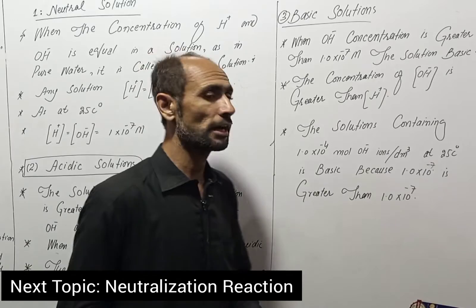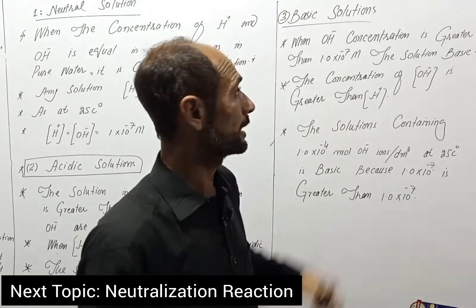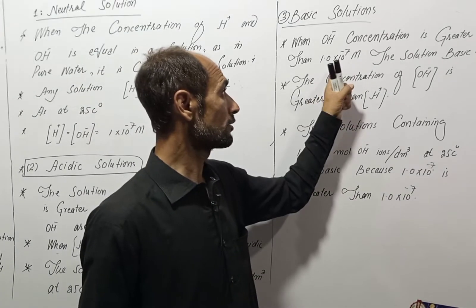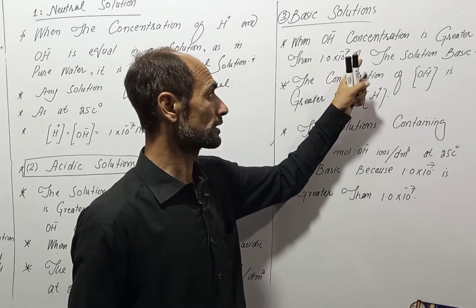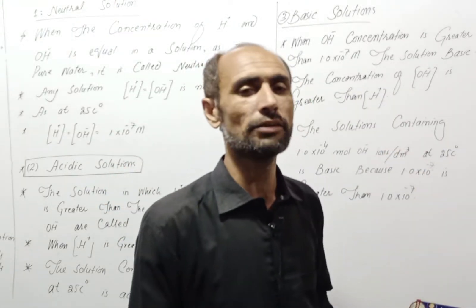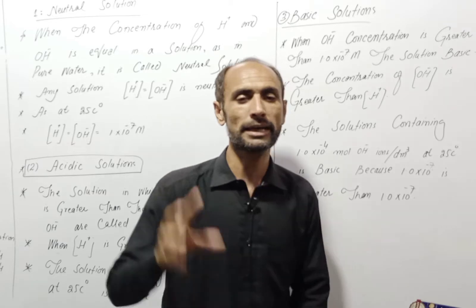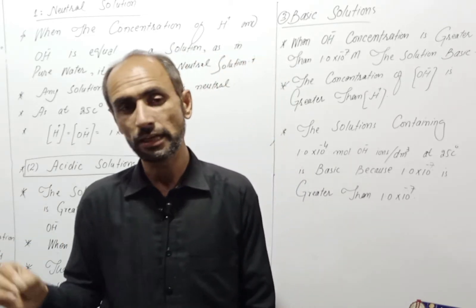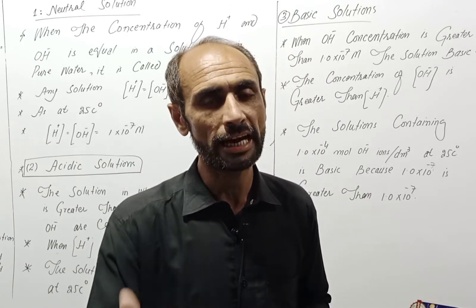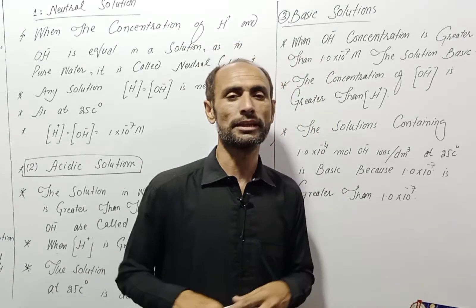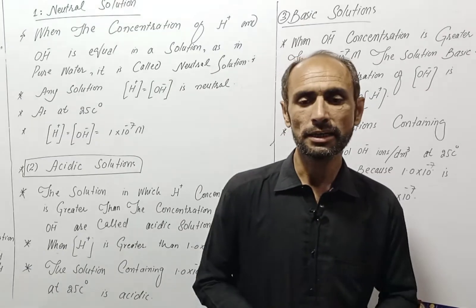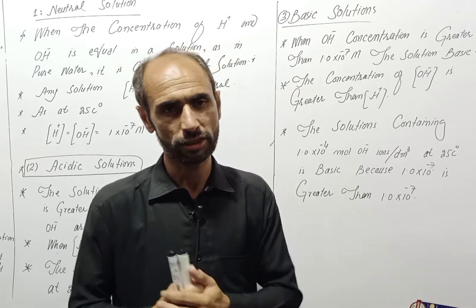The basic solution is when the OH ion concentration is greater than 1.0 × 10⁻⁷. If the OH ion concentration is less than 1.0 × 10⁻⁷, then the solution is less than neutral — it would be an acidic solution rather than a basic solution.